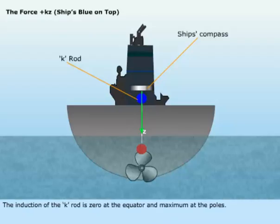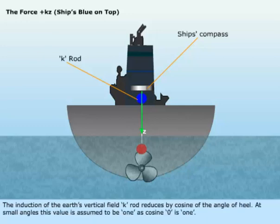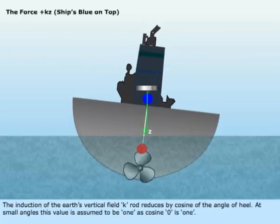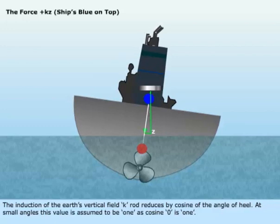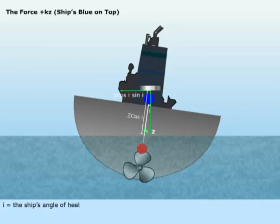The force Kz. The induction of the K-rod is zero at the equator and maximum at the poles. The deviating effect of the K-rod varies as cosine of the compass course. The induction of the Earth's vertical field on the K-rod reduces by cosine of the angle of heel. At small angles, this value is assumed to be 1, as cosine 0 is 1. I equals the ship's angle of heel.